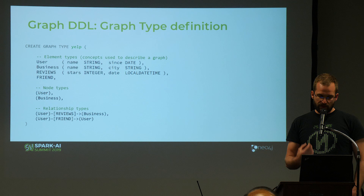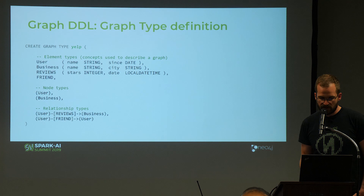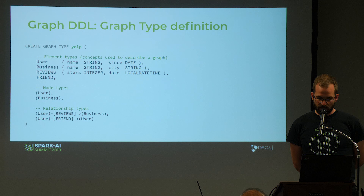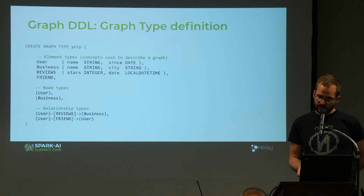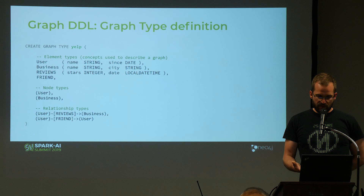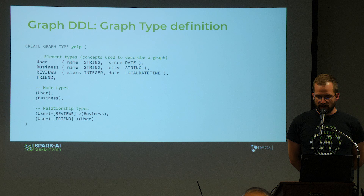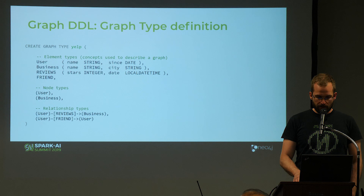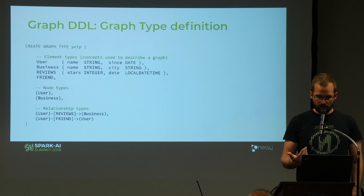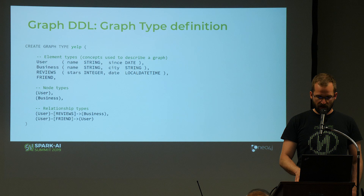When we define our element types, we can use them to define node types and relationship types that actually occur within the graph. Round parentheses identify node types, with the element type specifying the label. For example, there are nodes with element type user, meaning they have the label 'user' and the properties name and since. You can also put multiple element types into those parentheses to express multiple inheritance — inheriting all non-conflicting properties. Relationship types consist of three parts: the start node type, the relationship type element type, and the end node type.